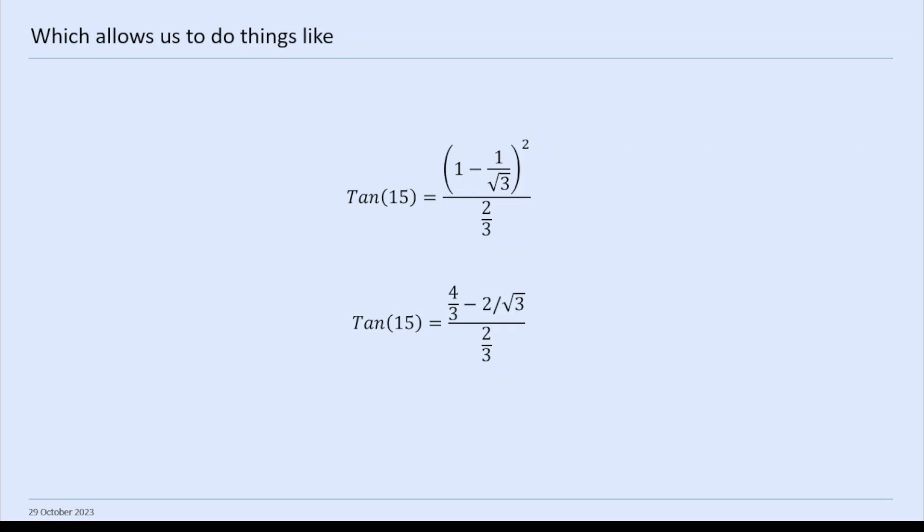And then on the top, we're going to square 1 minus 1 over root 3, which comes out as 4 over 3 minus 2 over root 3. Yeah, it's basically 1 plus 1 third, which gives us 4 over root 3, and then you've just got 2 lots of minus 1 over root 3.